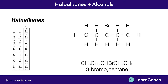Let's name this structure. The first step is always to count the number of carbons — we've got 5, so this is pentane. We've also got a bromine, whose prefix is bromo-, and the bromine is attached to the third carbon, so we put a 3 in front of bromo-. This structure is called 3-bromopentane, as shown in the condensed structural formula.